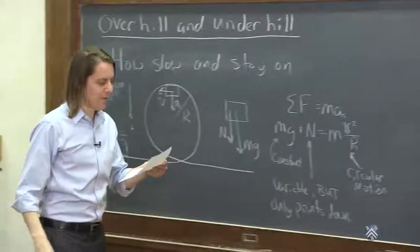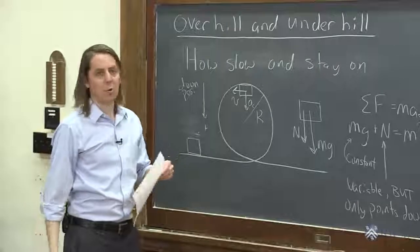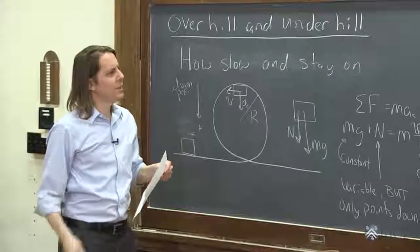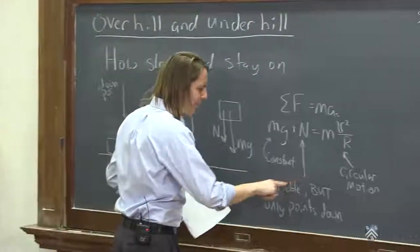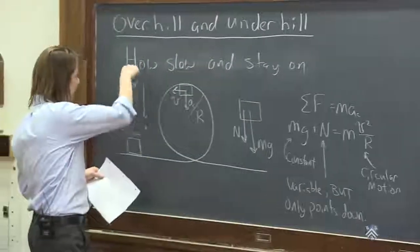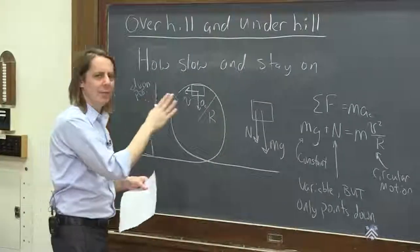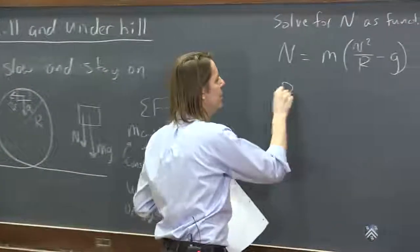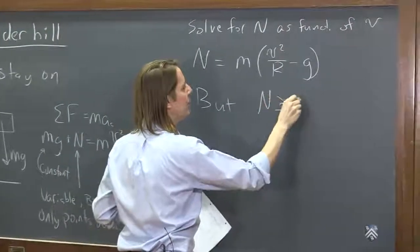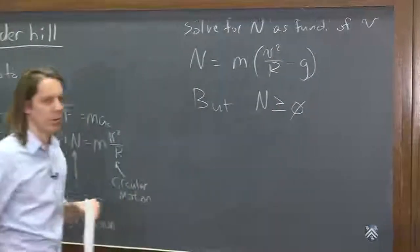So that's fine. That means that the faster it goes, the bigger normal force you need. That's fine. But then you remember, no, the normal force can only point down. We define down as positive. The normal force can never be negative. They say, but N is always greater than or equal to zero.